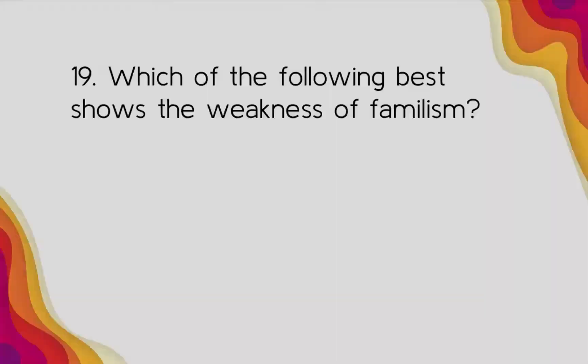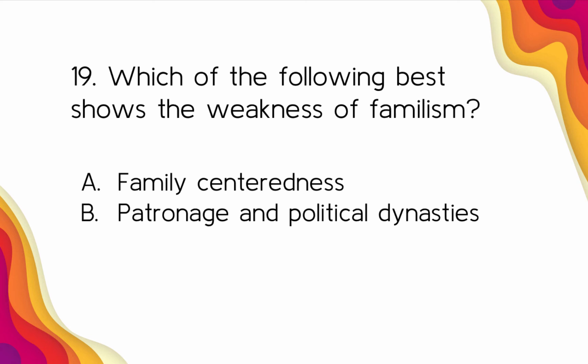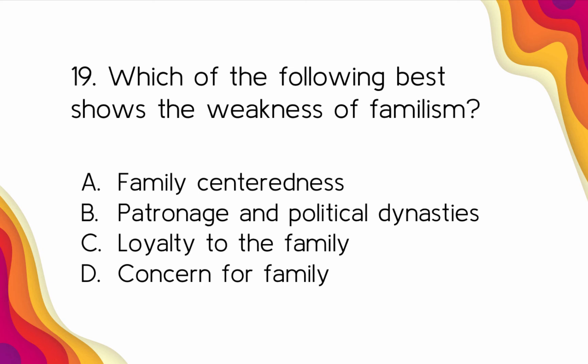Number nineteen: Which best shows the weakness of familism? A) Family centeredness, B) Patronage and political dynasties, C) Loyalty to the family, D) Concern for family. The answer is Letter B — patronage and political dynasties.